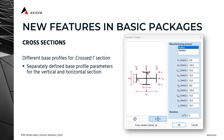The second improvement is that two different eye sections can be used for the crossed eye section type. The width, height, and thickness can be defined for the two sections separately, and sections can be loaded from the section library as well.